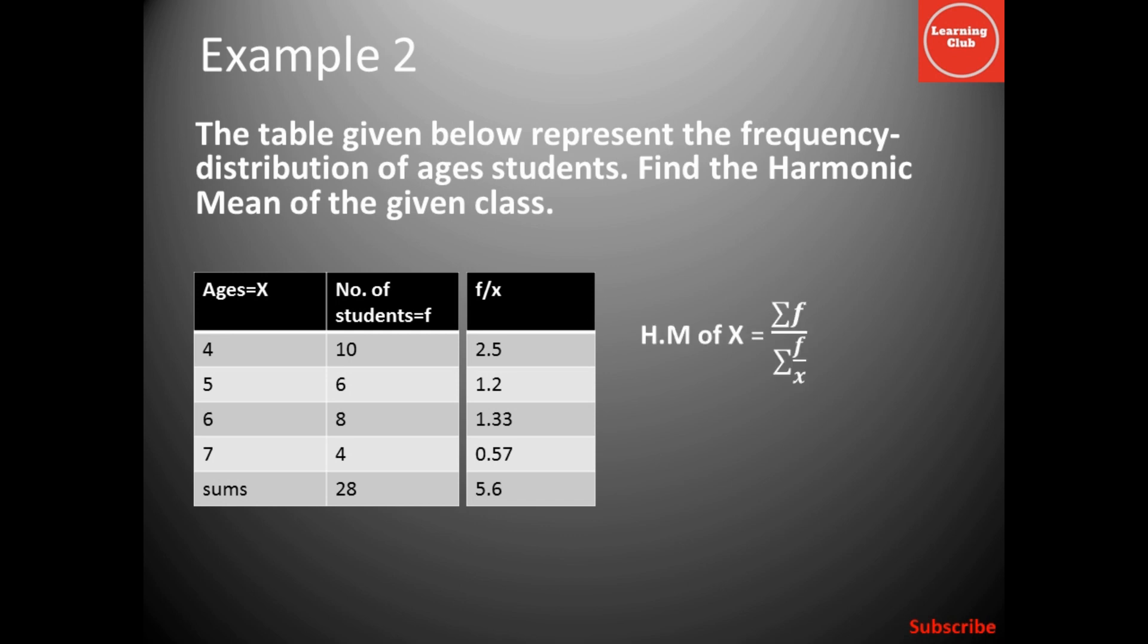As the formula of harmonic mean in the frequency distribution or in grouped data is equal to summation f over summation f over x. You can see in the table that we need only these two values. So, after putting the values, we have 28 divided by 5.6. The answer is 5. It means the average age in the class is 5.